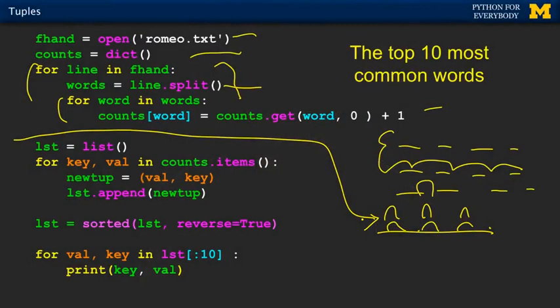Now we're going to extract the data out of that histogram dictionary and make a reverse tuple — value-key tuple instead of key-value. So we do what we just did on the previous slide: we write a for loop going through key-value pairs. Then we make a tuple that's value-key, put it in the variable new_tuple, and append that to the list. So we end up with a list of tuples in value-key order.